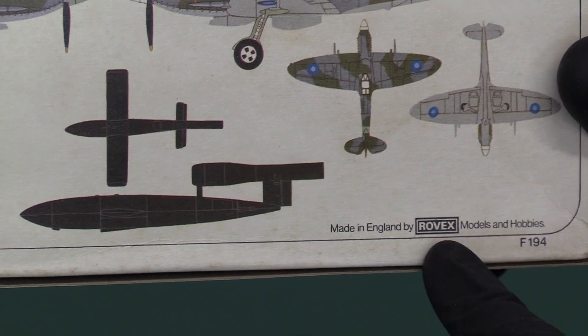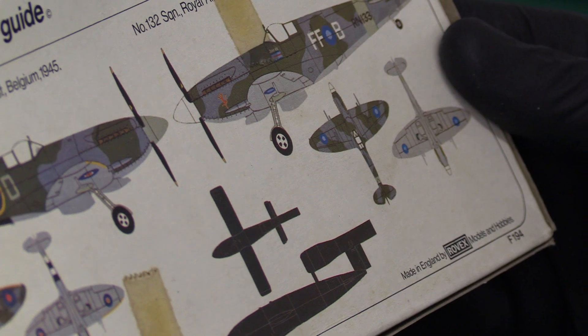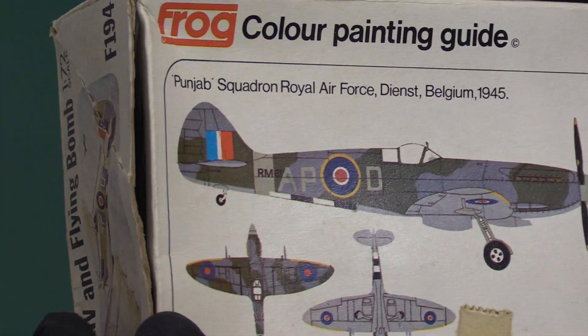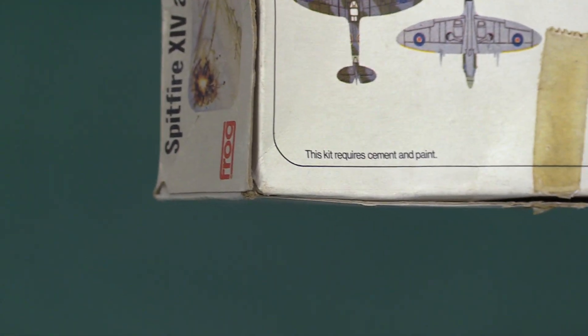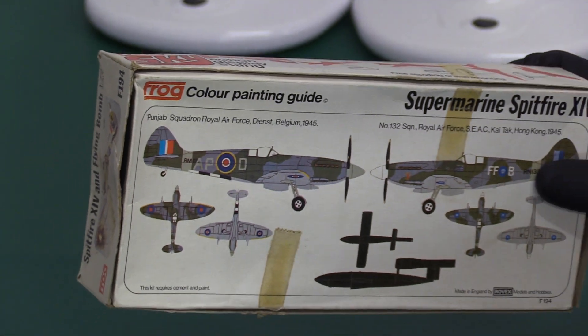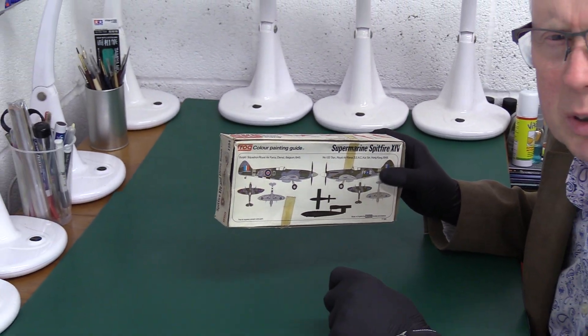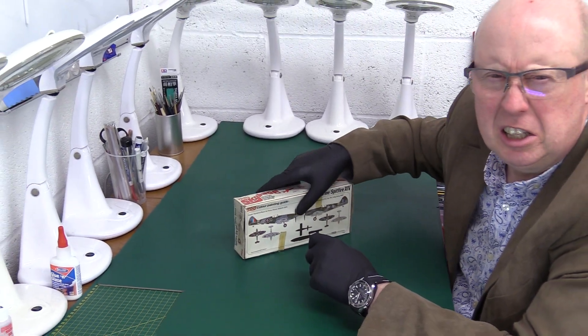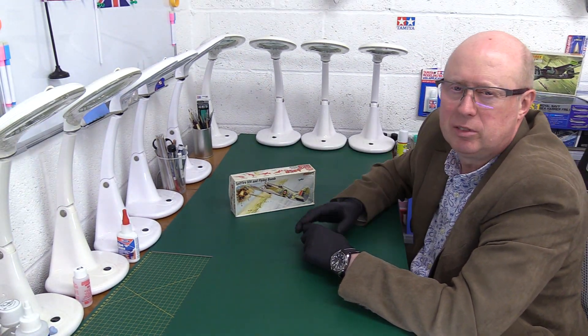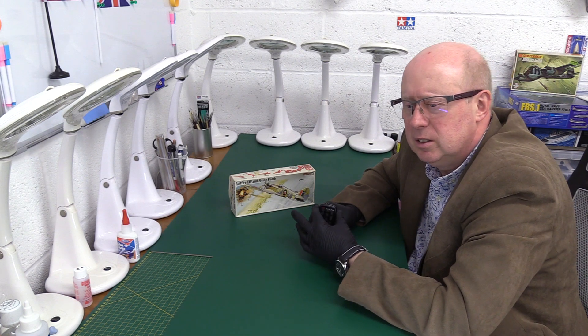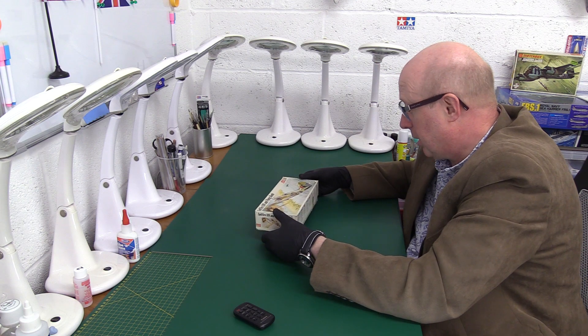Rovex was a subsidiary of Triang, British company. FROG, for those of you that don't know, stands for Flies Right Off The Ground. Which sounds a bit weird, but you have to bear in mind that FROG also produced chuck gliders and planes you could fly, gliders and slope soarers. British company, so we should celebrate that.